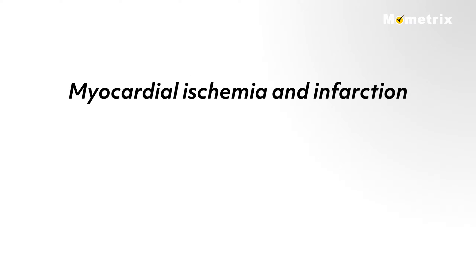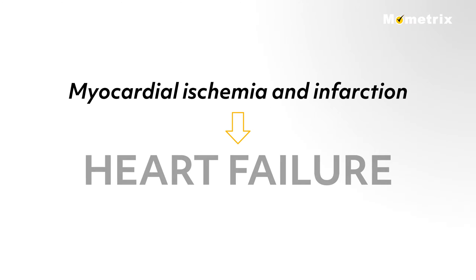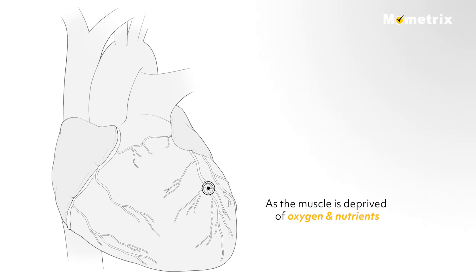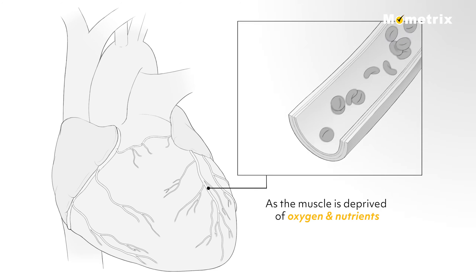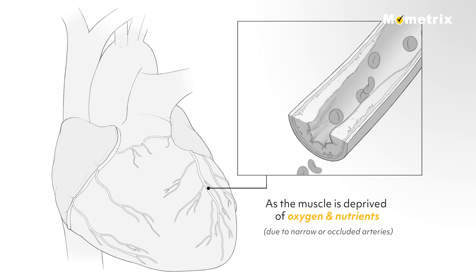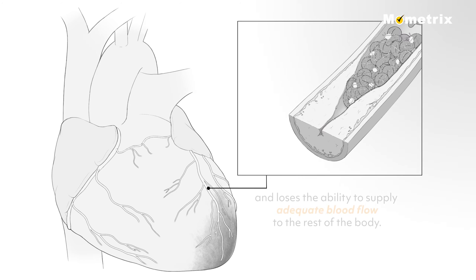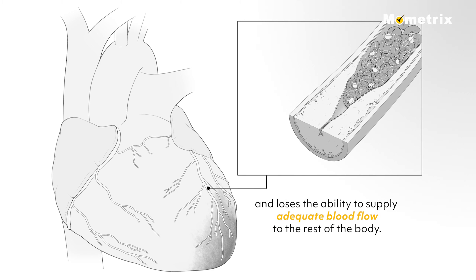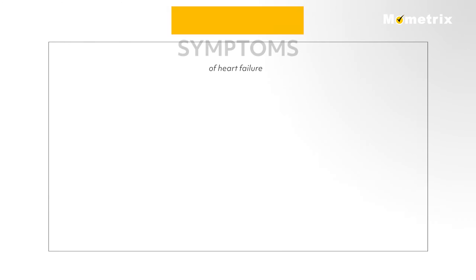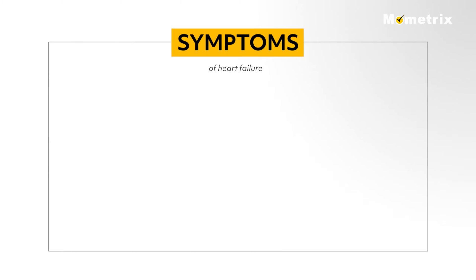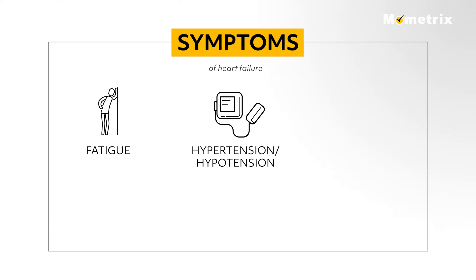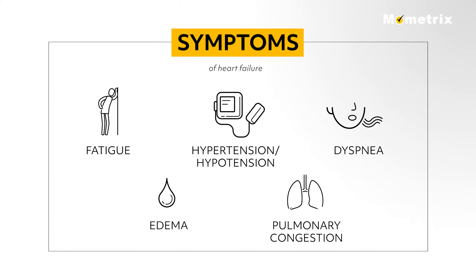Myocardial ischemia and infarction can lead to heart failure. As the muscle is deprived of oxygen and nutrients due to narrowed or occluded arteries, the muscle becomes less compliant and loses the ability to supply adequate blood flow to the rest of the body. Patients with heart failure often present with fatigue, hypertension or hypotension, dyspnea, edema, and pulmonary congestion.